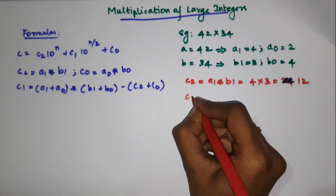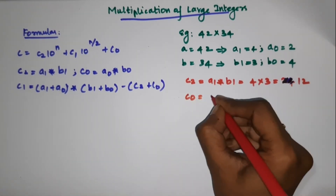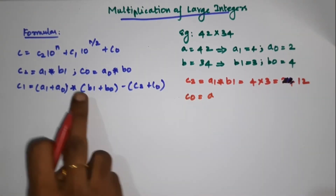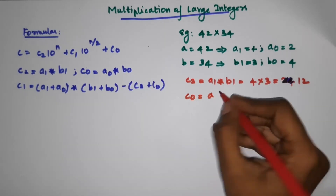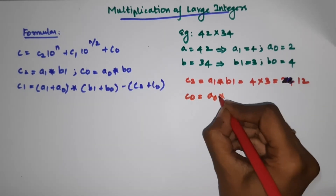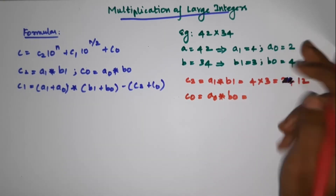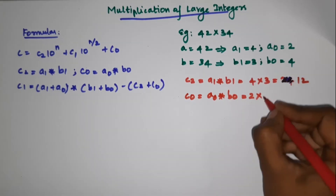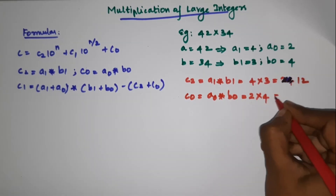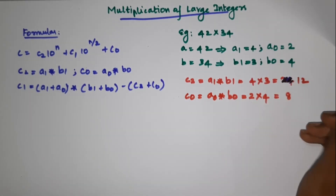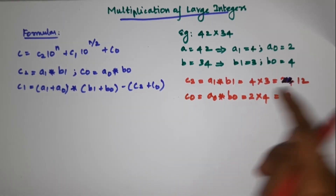Next we find C0. C0 is equal to A0 star B0. A0's value is 2, and B0's value is 4, so 2 times 4 gives us 8. C0 equals 8.